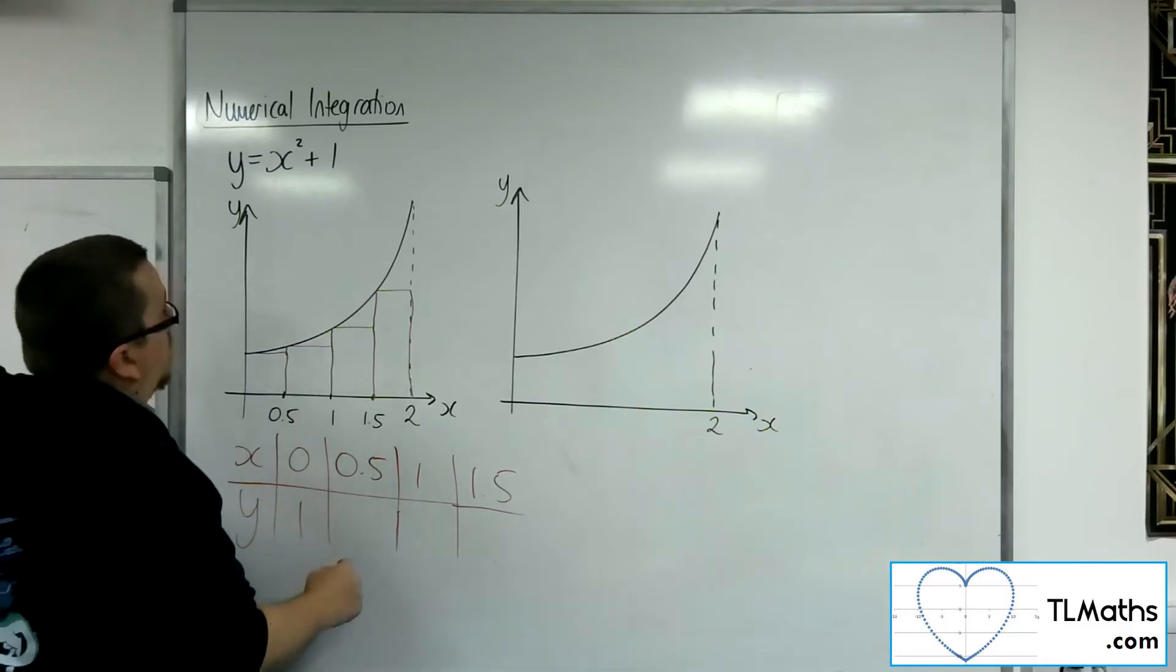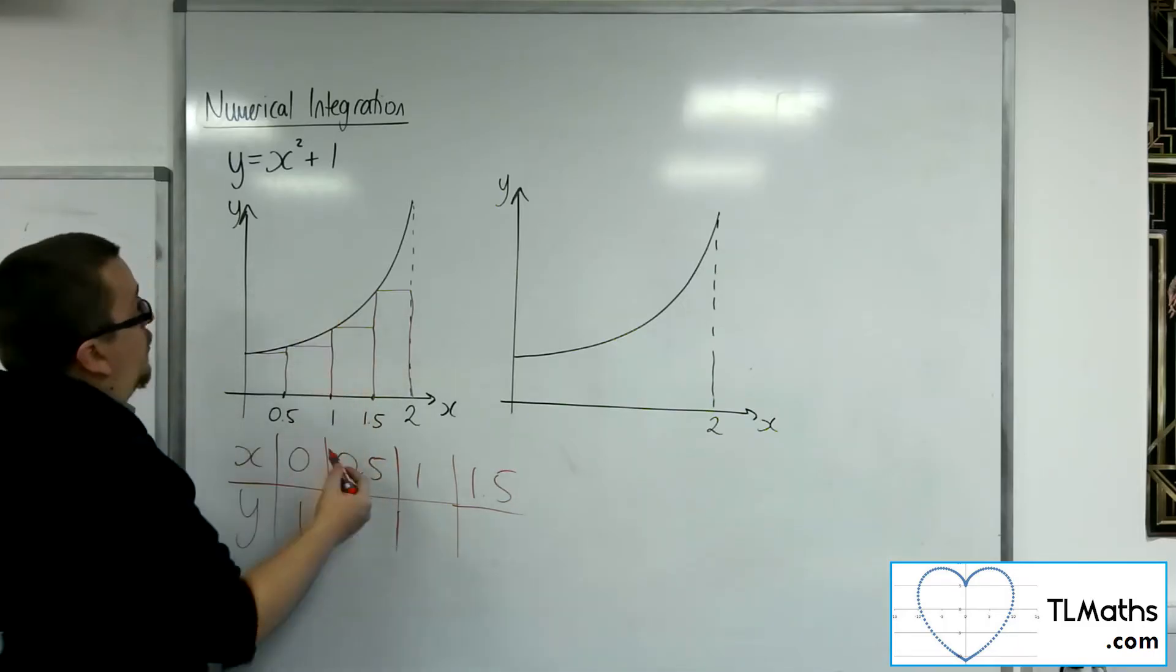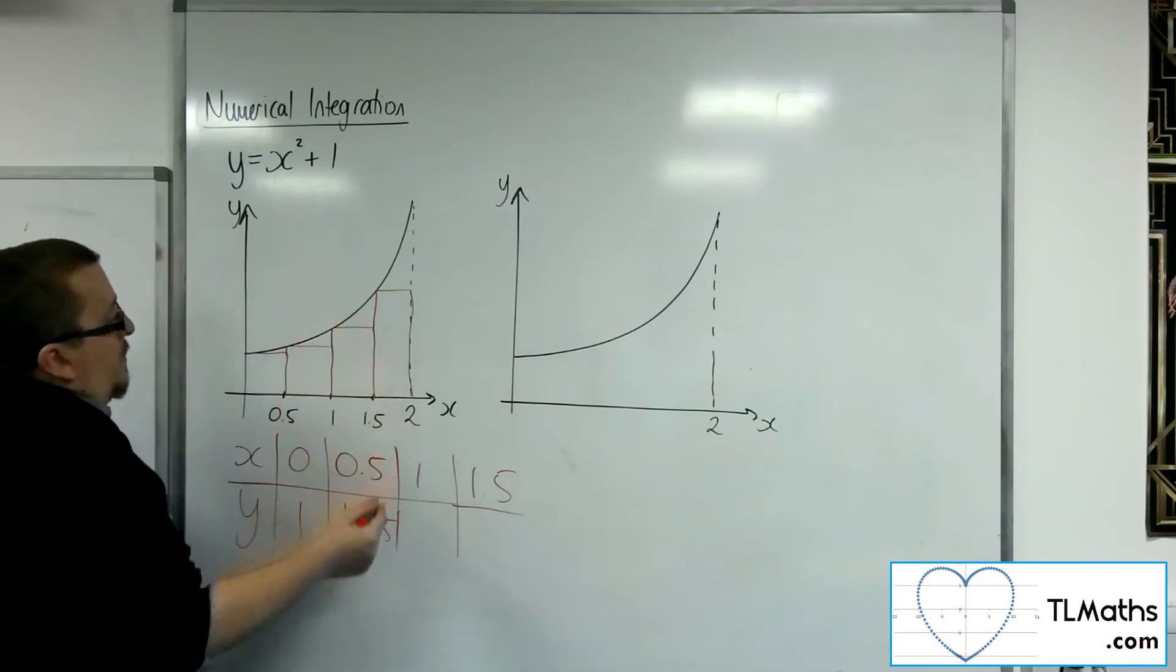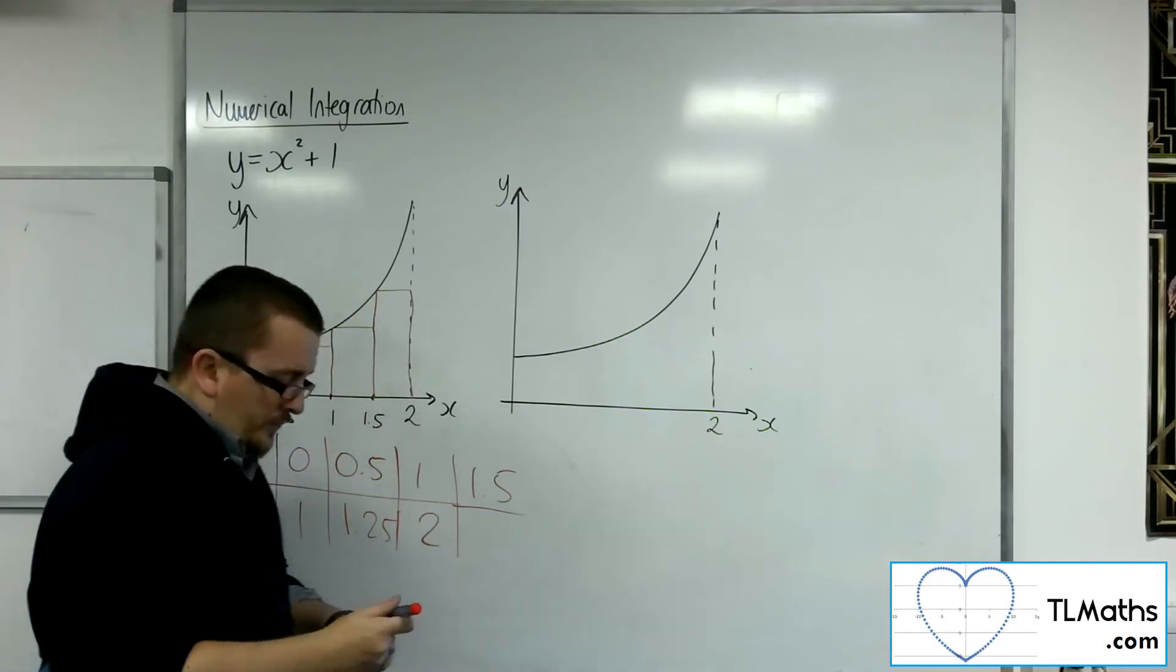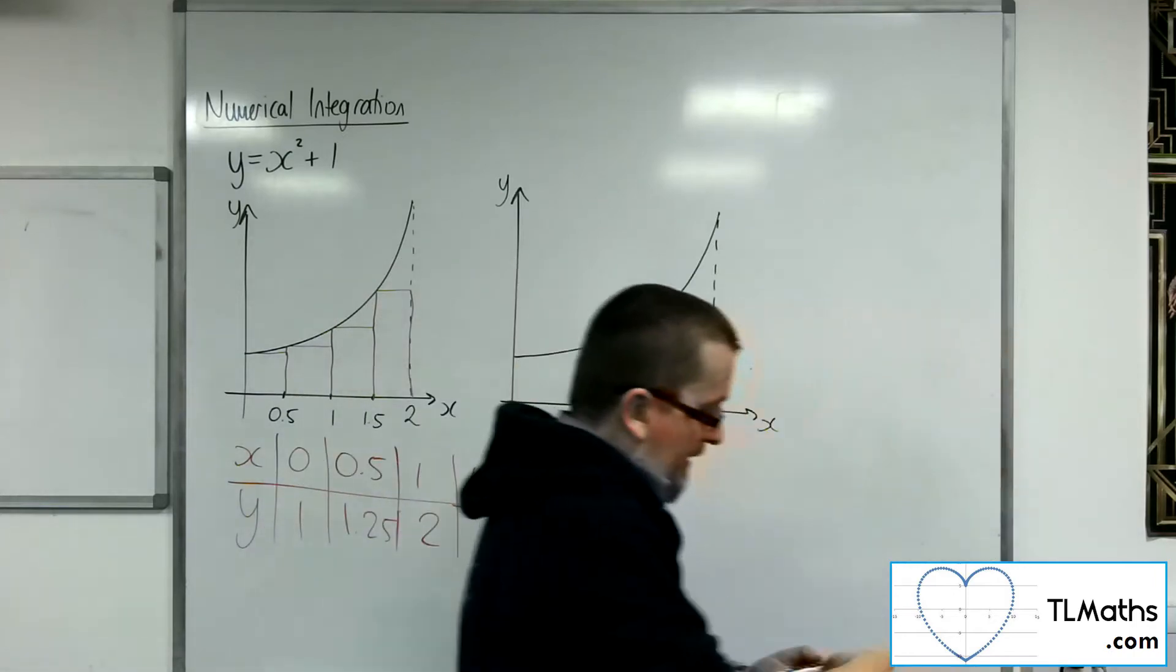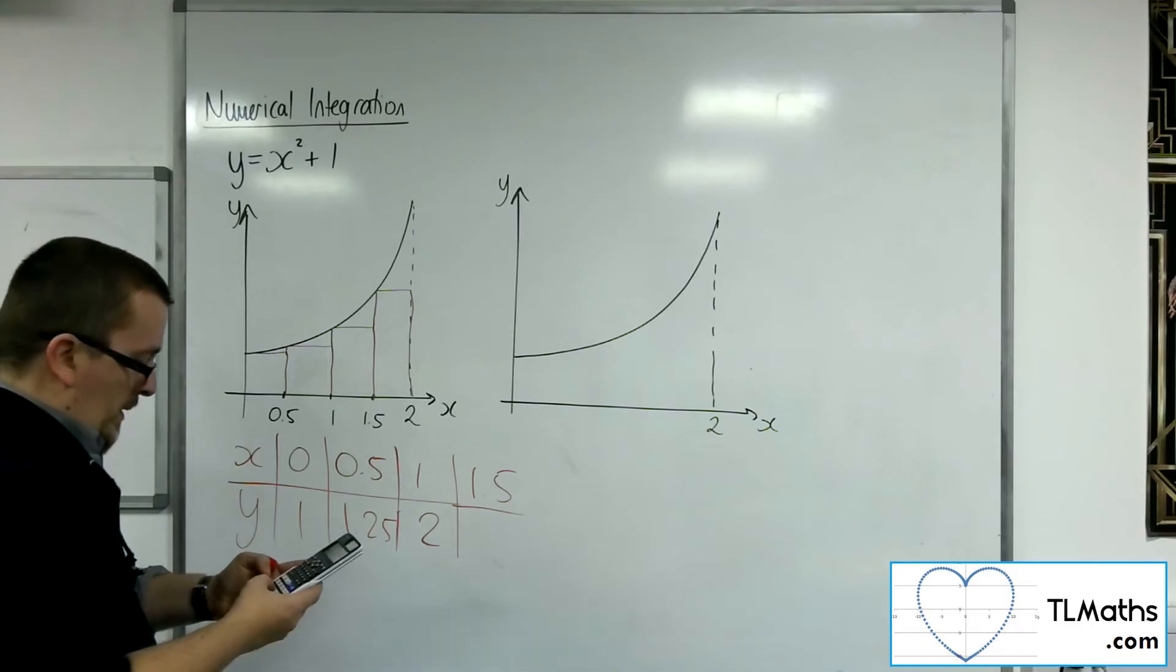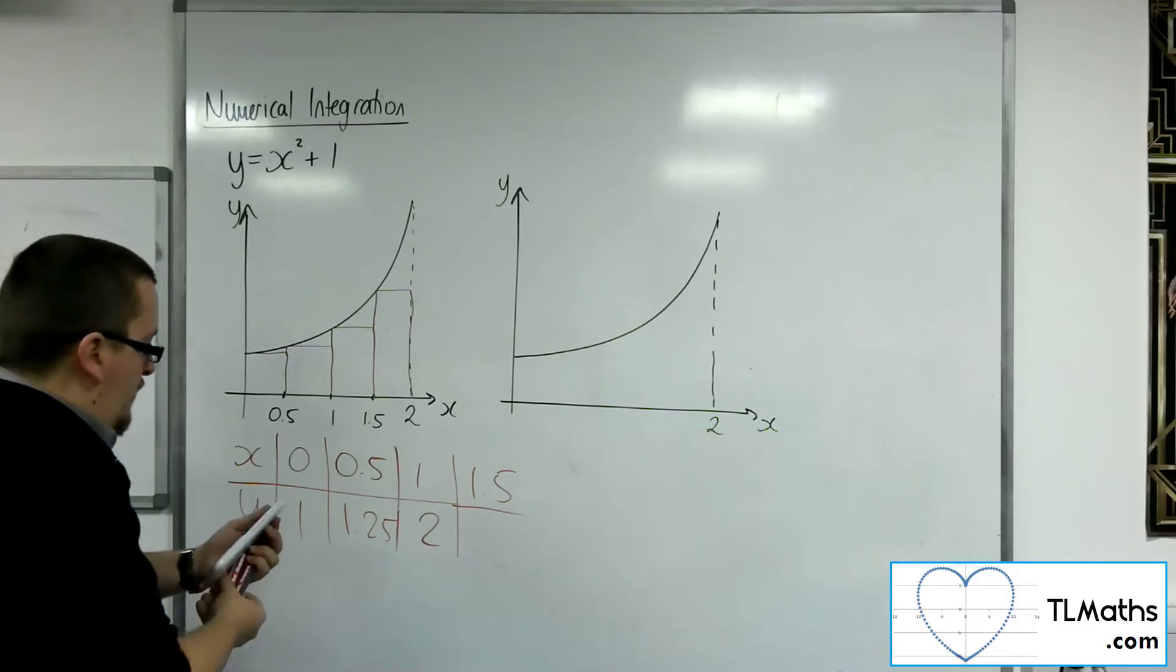So I'll get 1. I'll get 0.5 squared, so 0.25 plus 1, so 1.25. 1 squared plus 1 is 2. To make sure I get this right, 1.5 squared plus 1, so 3.25.